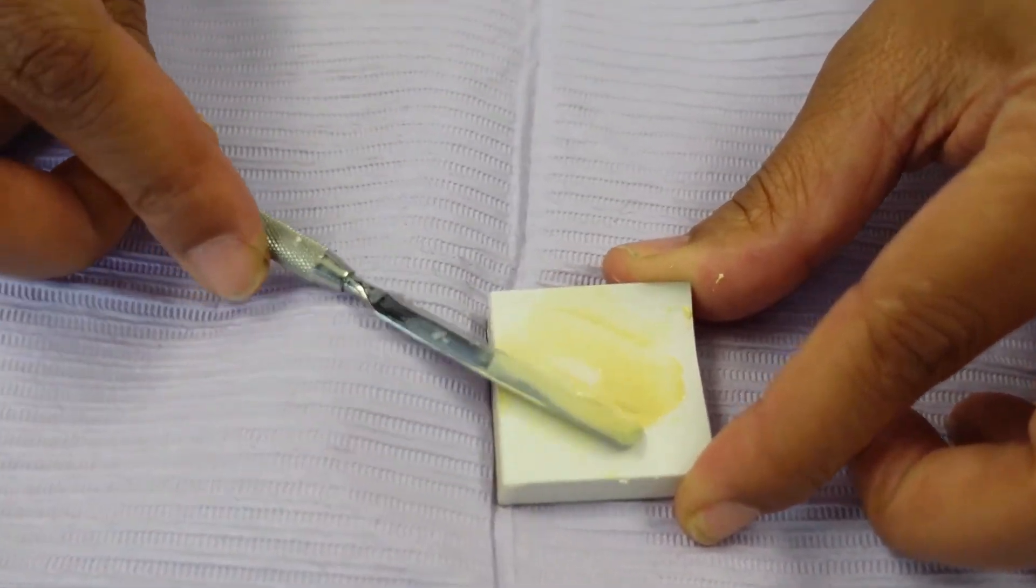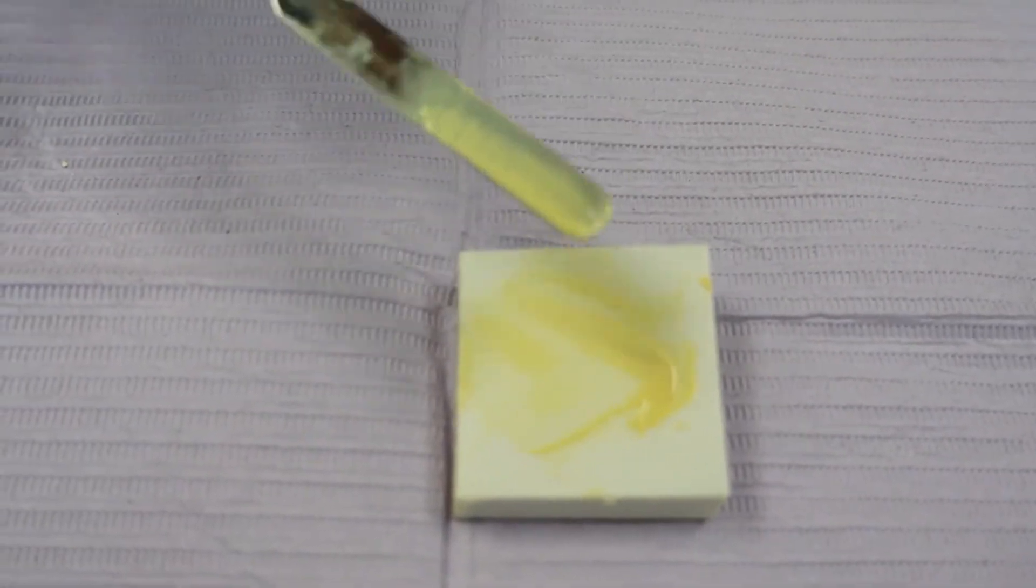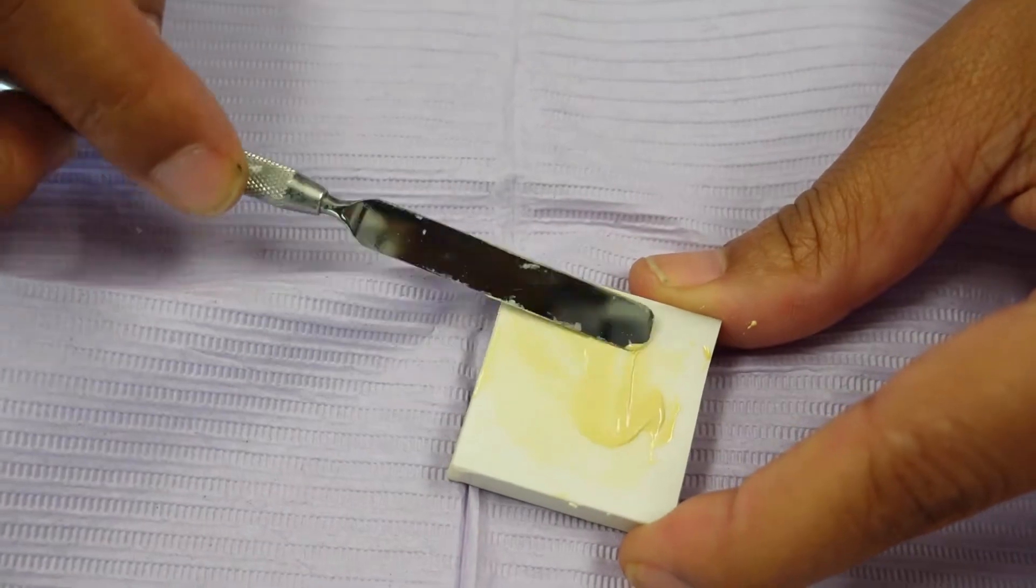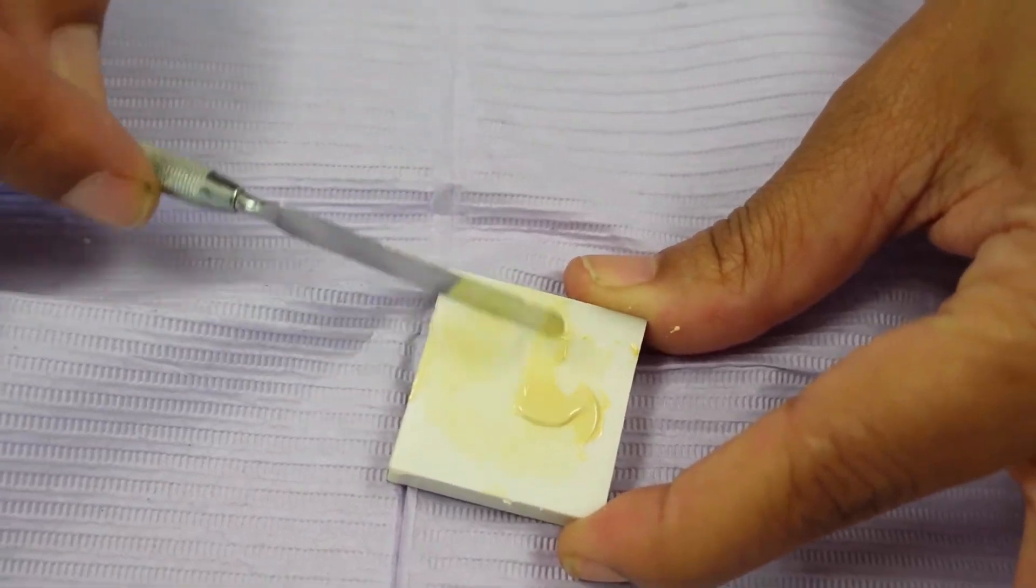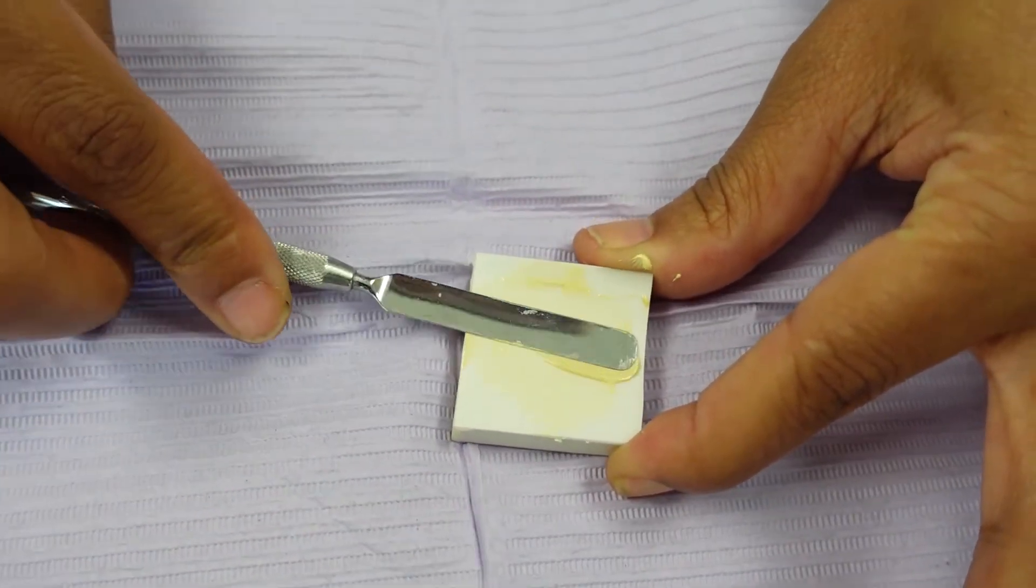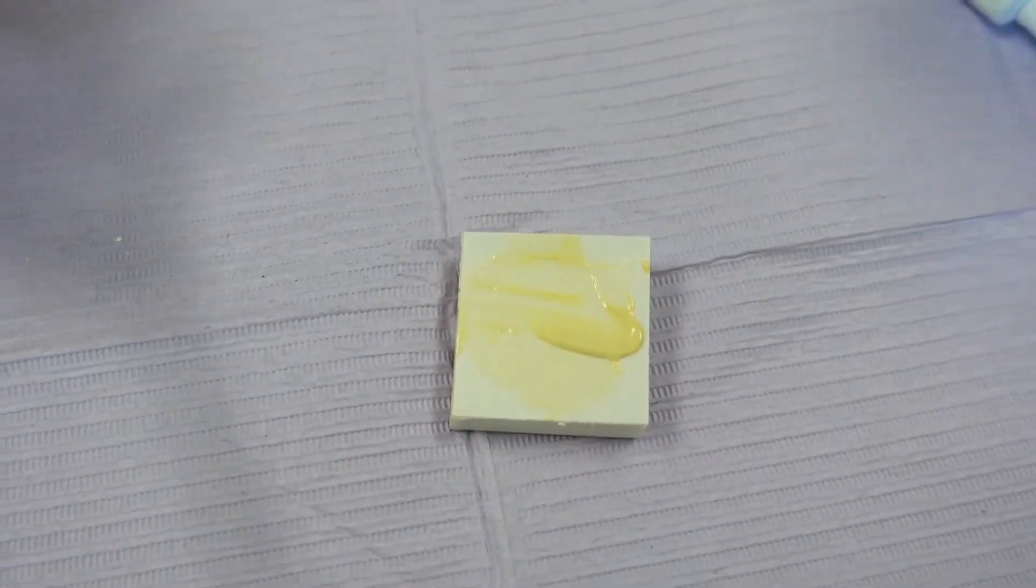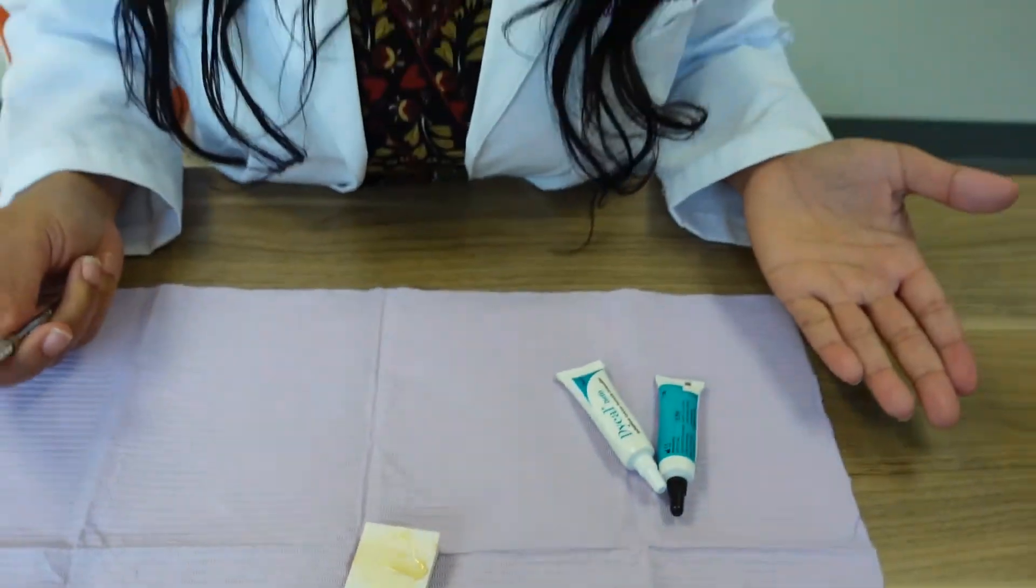That is how to mix die-cal. You see that? One uniform color - smooth, no clumps. That is how you mix die-cal.